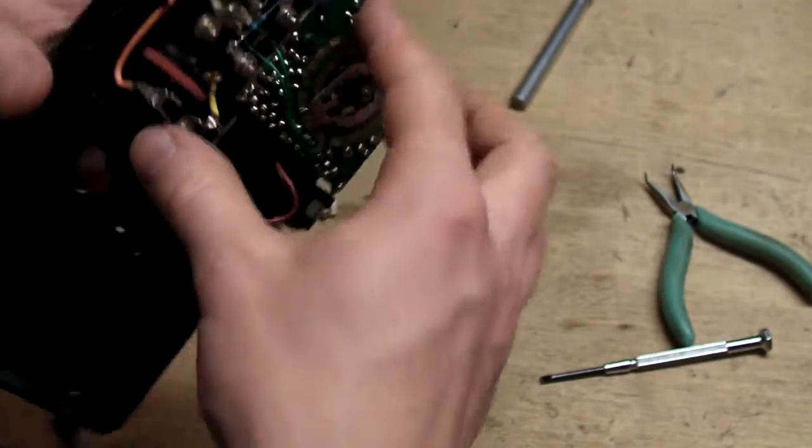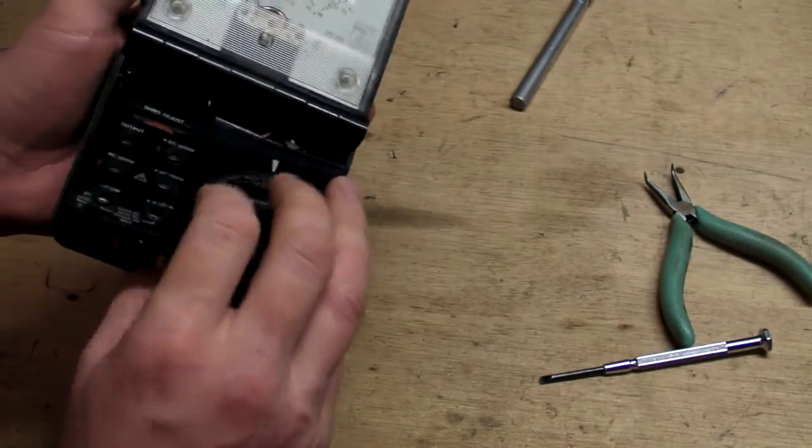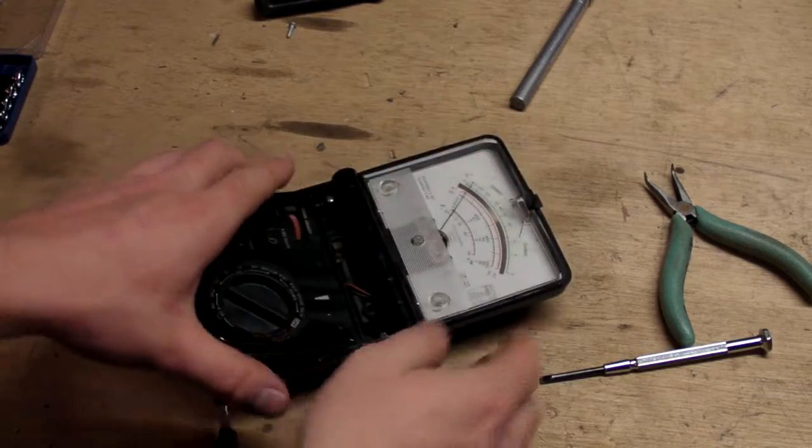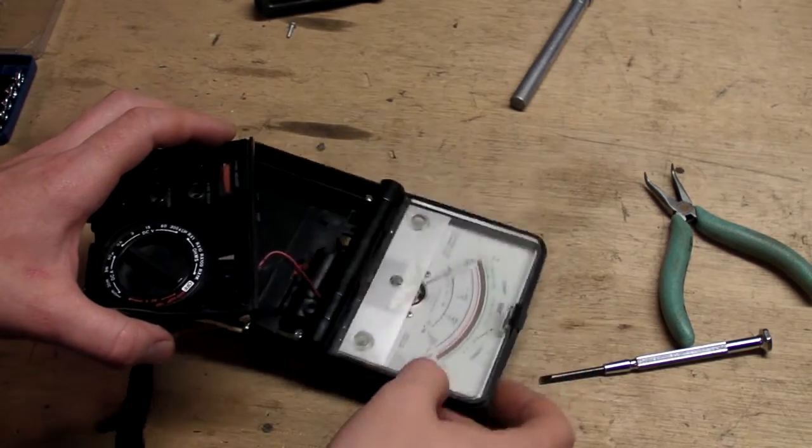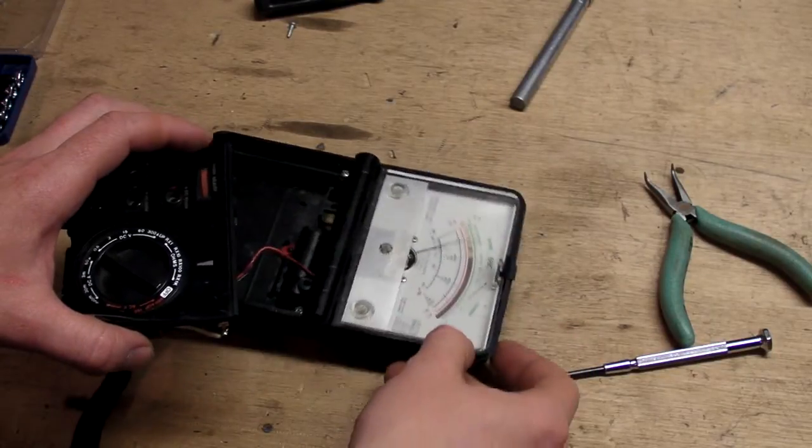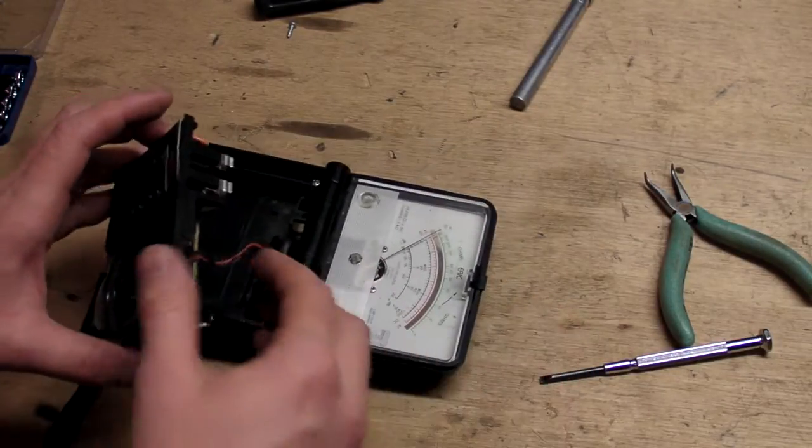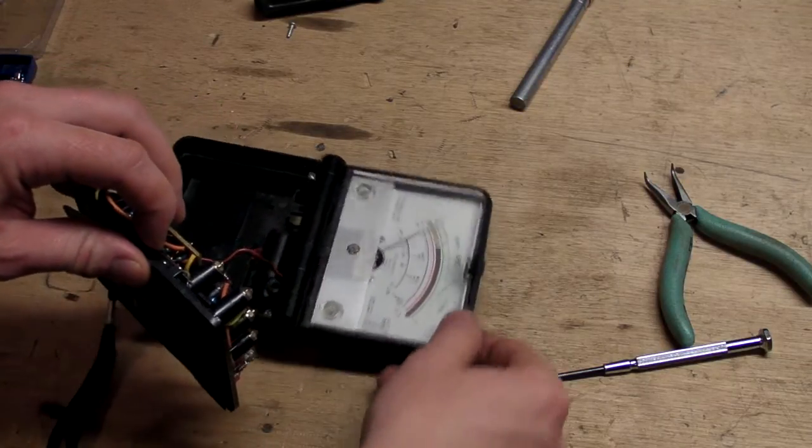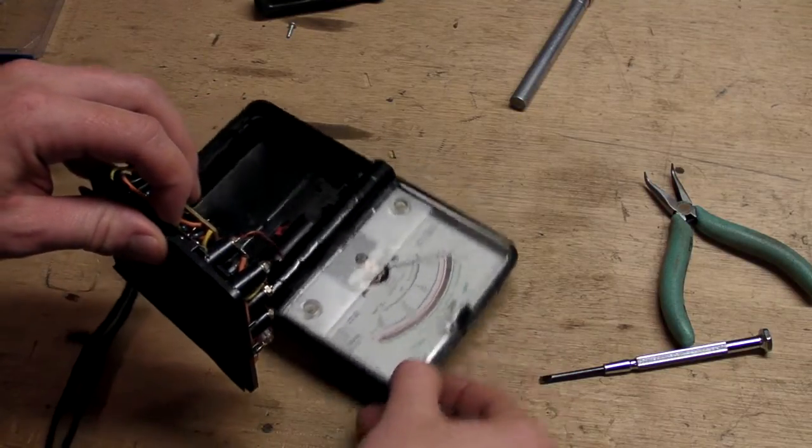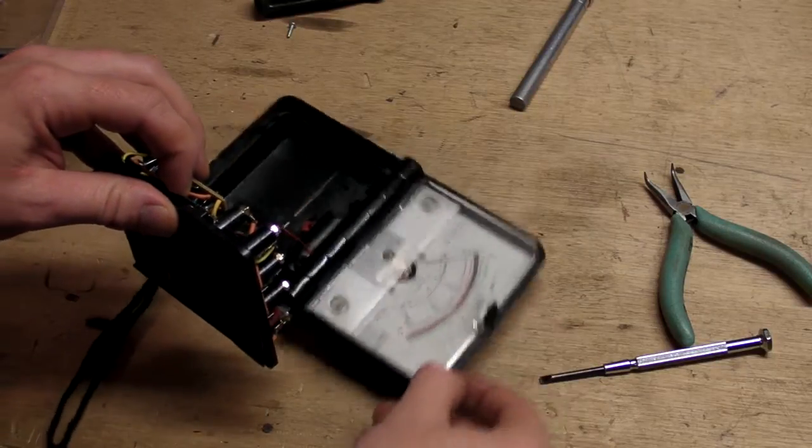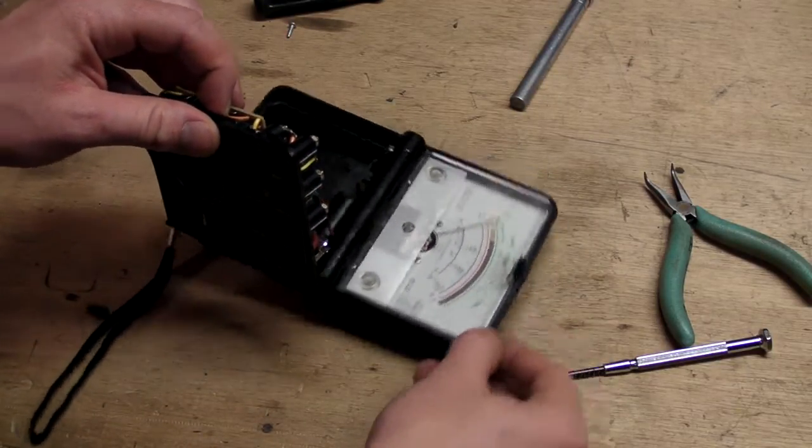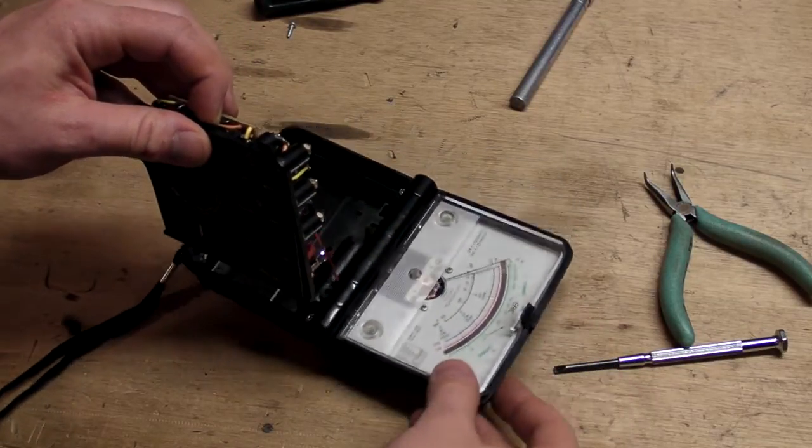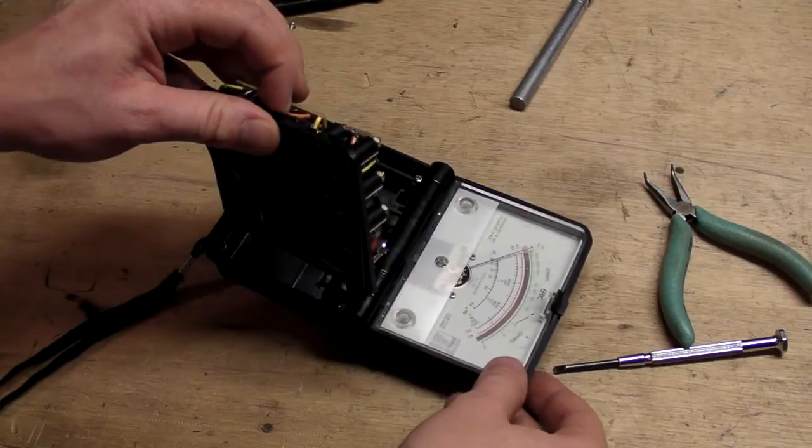And what that does is that shorts out the meter, shorts out the coil of the meter, so that you can see if I wiggle it around here, the meter moves around quite a bit. But then if I hold the contacts closed, the meter still moves around, but not quite as much. And that just dampens any motion when it's closed up, and when it's in transport, it just helps to prevent any undue damage.